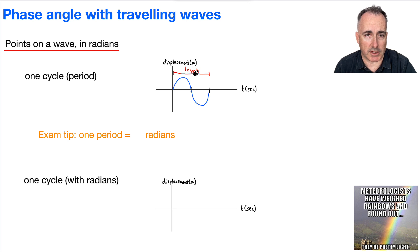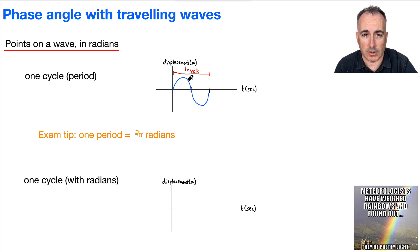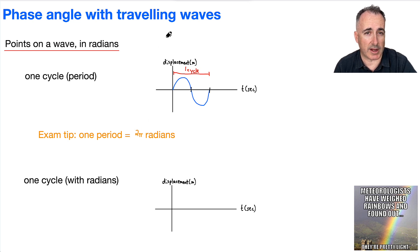You could also measure from peak to peak or trough to trough, but you get the idea. The key piece we need is that one period is going to be measured in radians. We're going to say one whole cycle, one whole period, is equal to two pi radians. This is the key thing we're going to need.